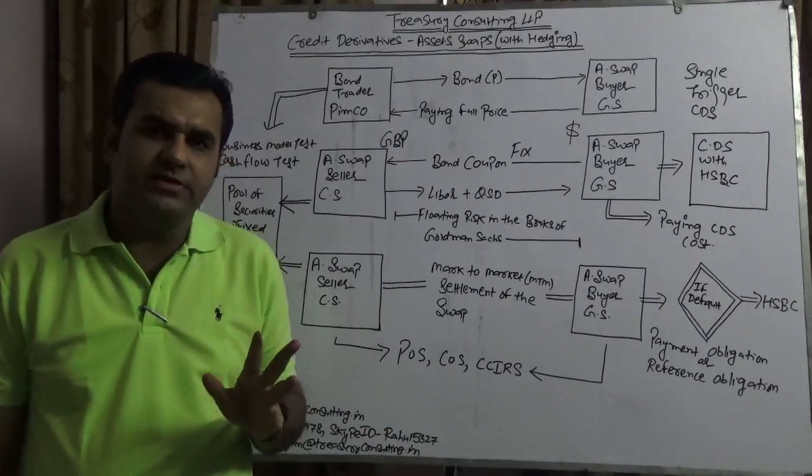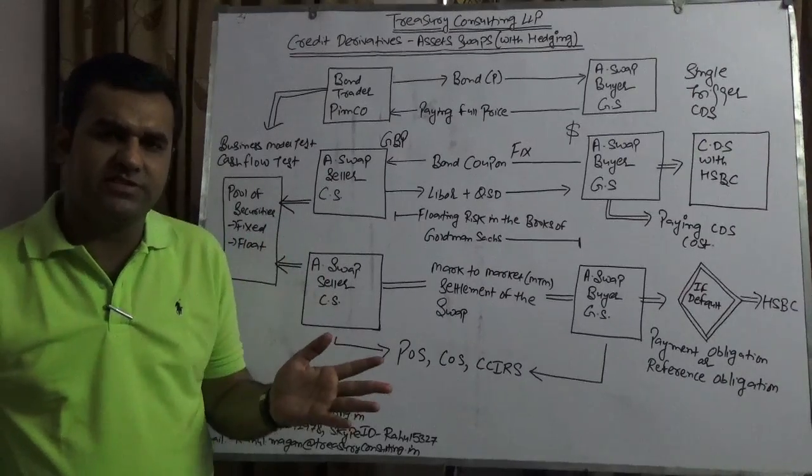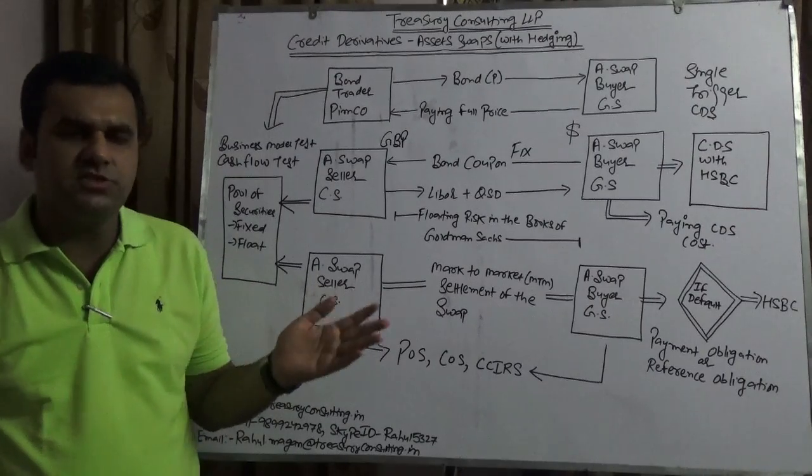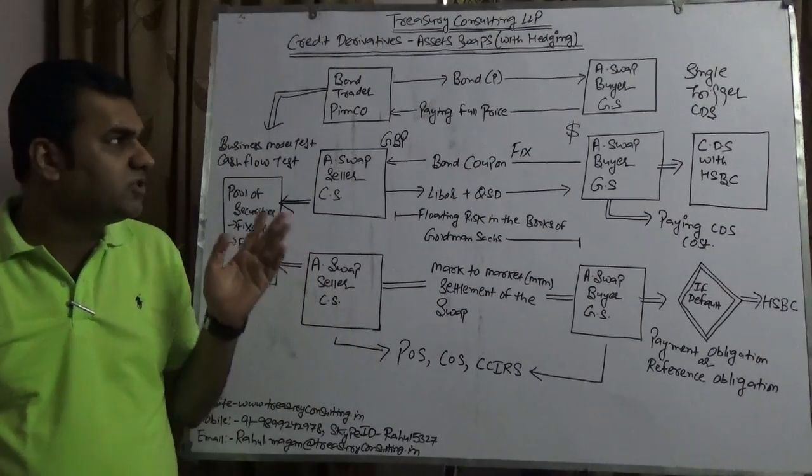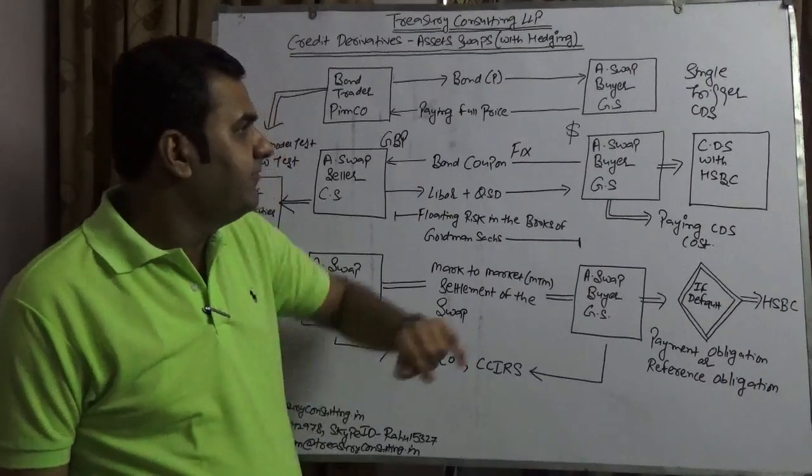Total return swap is when one side of liability offsets with another side of asset, or another set of liability offsets with one side of asset. This is not total return swap—this is cross-currency asset swap. Now, what does cross-currency asset swap mean?